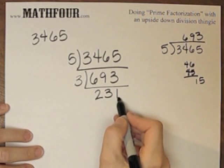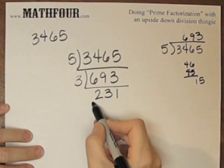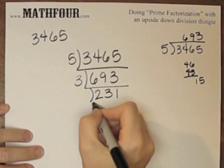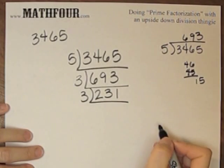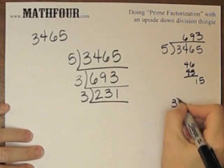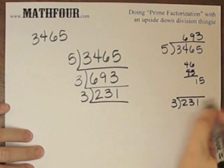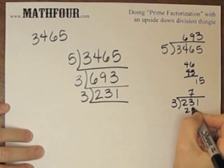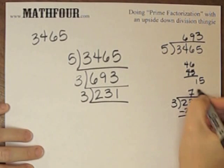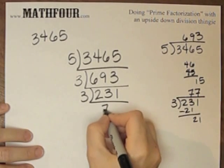Two plus three is five, plus one is six. So, that is divisible by three again. Let's put a three there. Three goes into 23 seven times. Oh, there's another seven. So, there's 77.